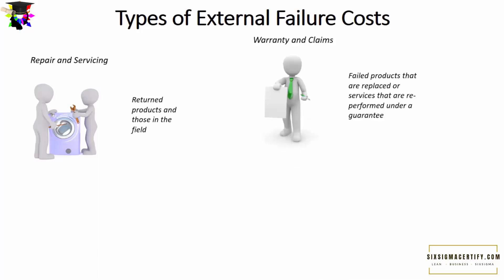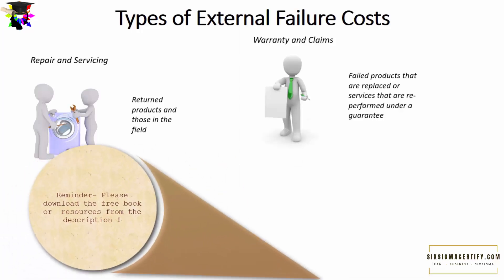The second type of external failure cost is warranty and claims. Warranty and claims cost involves failed products that are replaced or services that are re-performed under a guarantee.